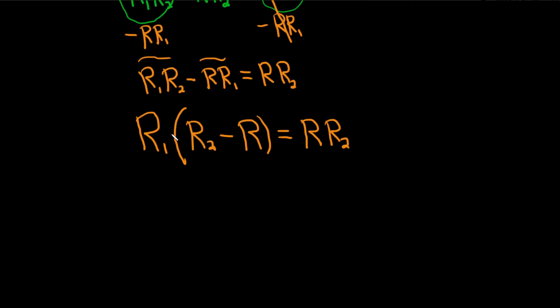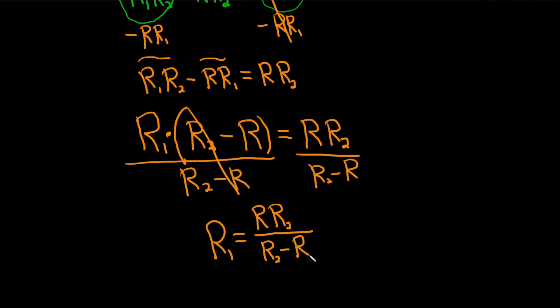R1 is being multiplied by this R2 minus R. So you have to divide both sides by this whole thing, by this R2 minus R. So you get R1 equals R, R2 over R2 minus R. And that would be the final answer.